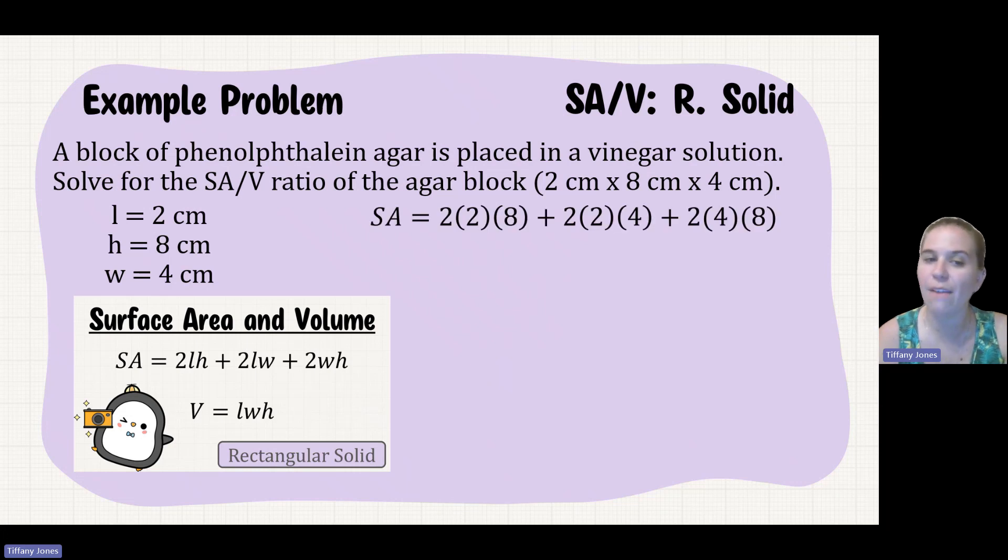So we'll sub it in. We have our length being 2 and our height being 8, plus our length being 2 and our width being 4, plus our width being 4 and our height being 8. We'll multiply that out, and that gives us 32 plus 16 plus 64, which gives us 112.